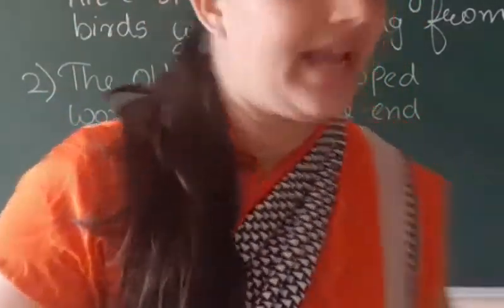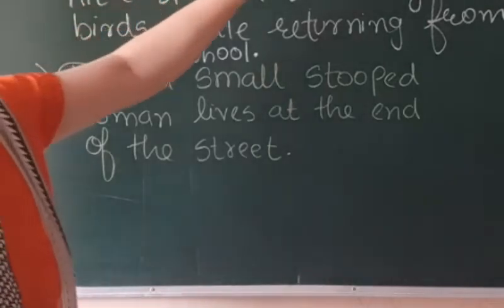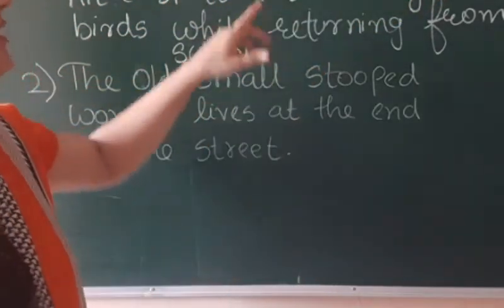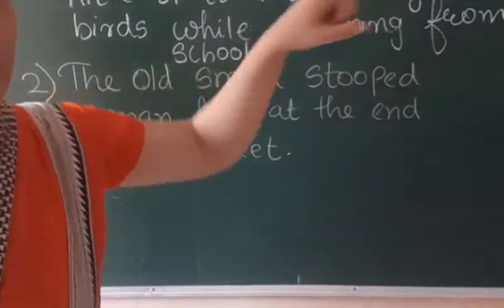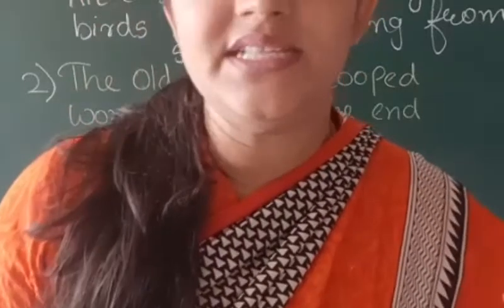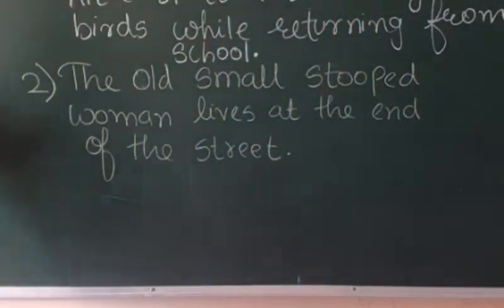So in short, 'Rita spotted six large brown birds.' In the question they had given 'large six brown,' but according to the order, number should be first, then opinion, and at last color. Now the second sentence: 'The old small stooped woman lives at the end of the street.'